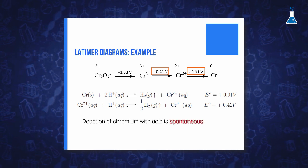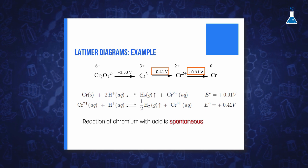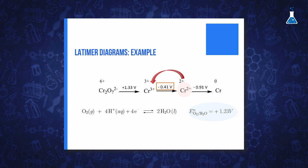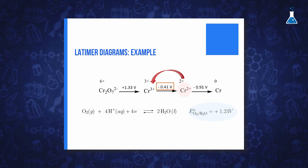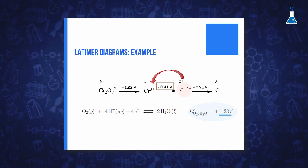An additional conclusion that can be drawn by observing the diagram is that chromium 2+ is unstable and would be easily oxidized by oxygen, considering that the reduction potential of oxygen to water is 1.23 volts.